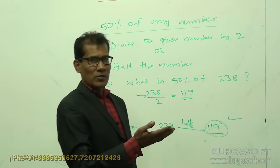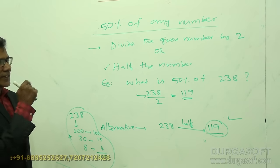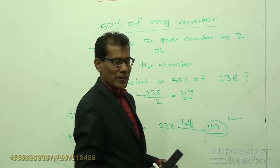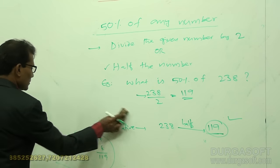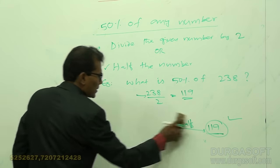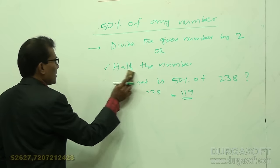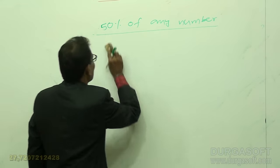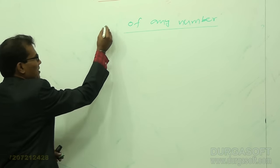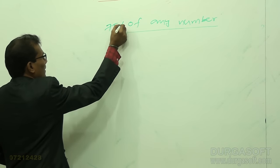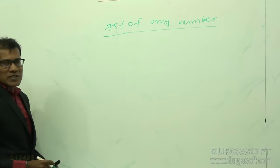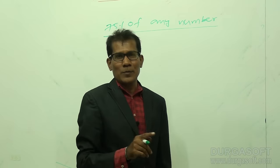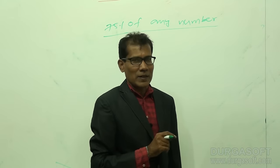Coming to 75% of any number: to calculate 75% of any number, simply multiply the given number by 3/4.